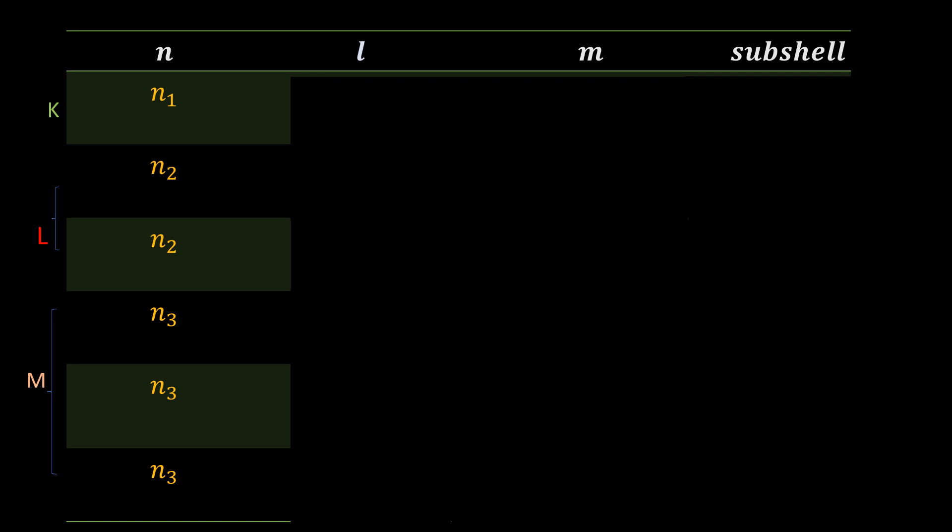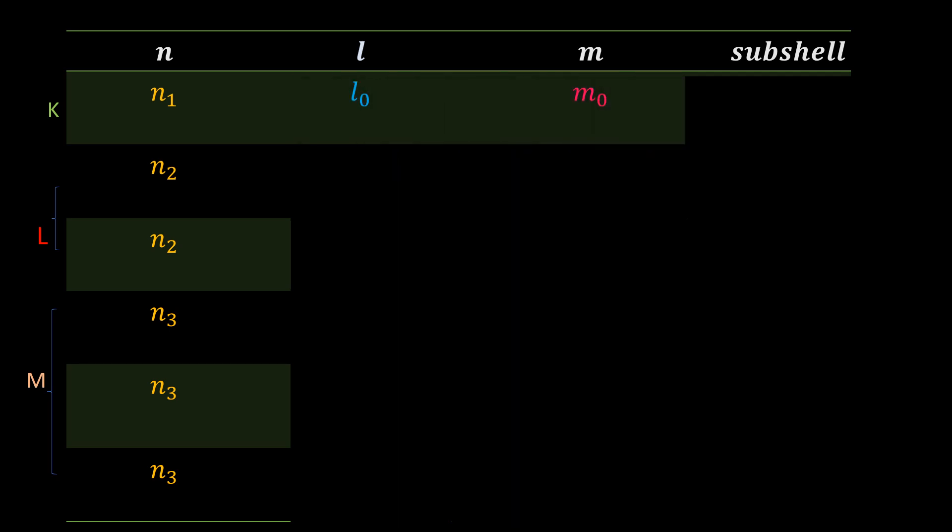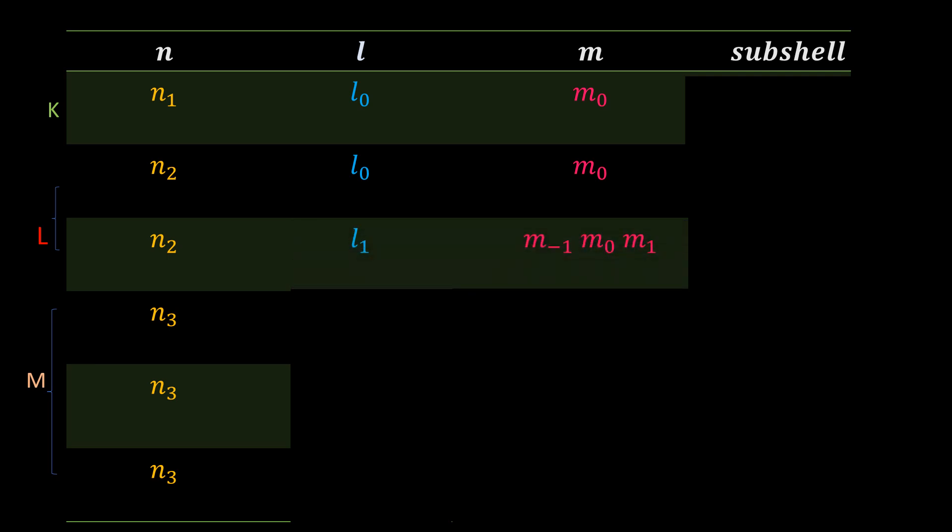For n equal to 1, l is equal to 0, and m is equal to 0. When n is equal to 2, there are two possibilities. That is, n can be 2, and l and m are 0, or n is equal to 2, and l is 1, so that m is minus 1, 0, and 1.